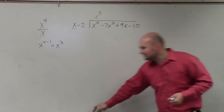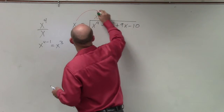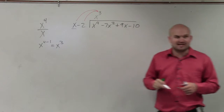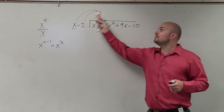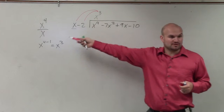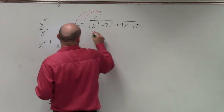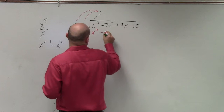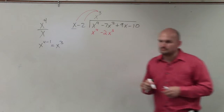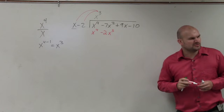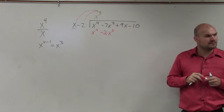Now we have to make sure we multiply our quotient times both of the terms in the divisor. You only divide by the first term, but you multiply back both terms. So doing that, I get x to the fourth minus 2x cubed — which we have an issue with, because there's no x cubed in the dividend.